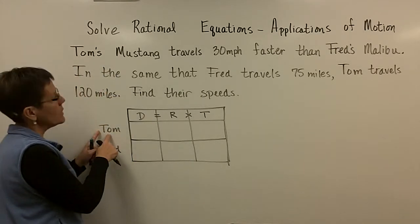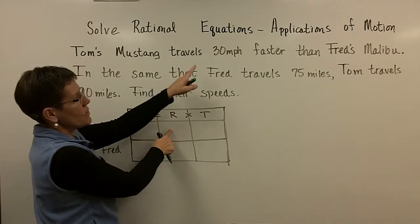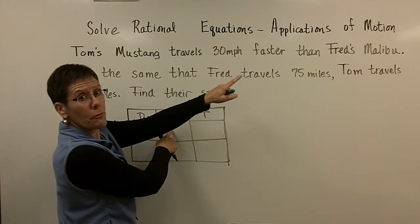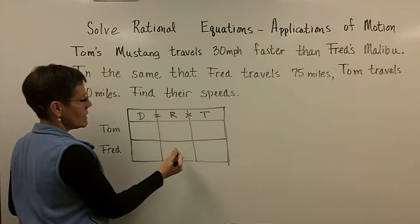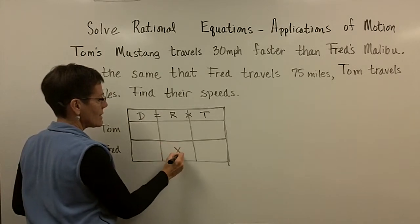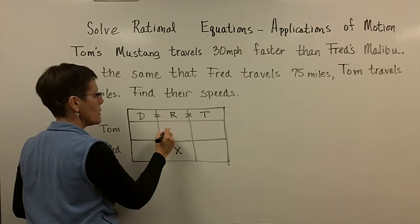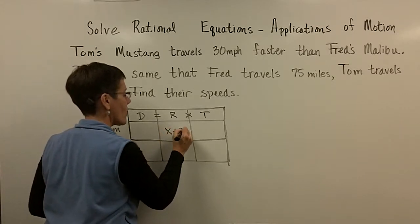Tom, his rate is 30 miles per hour faster than Fred's. Let Fred's rate be x. And let's let Tom be x plus 30.